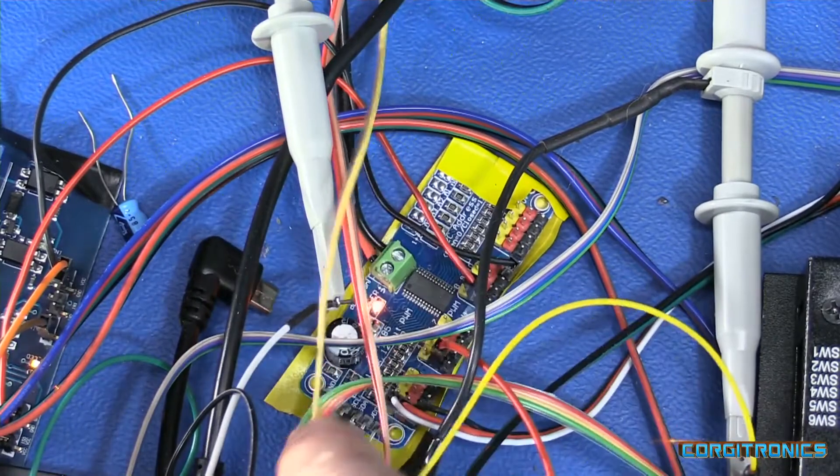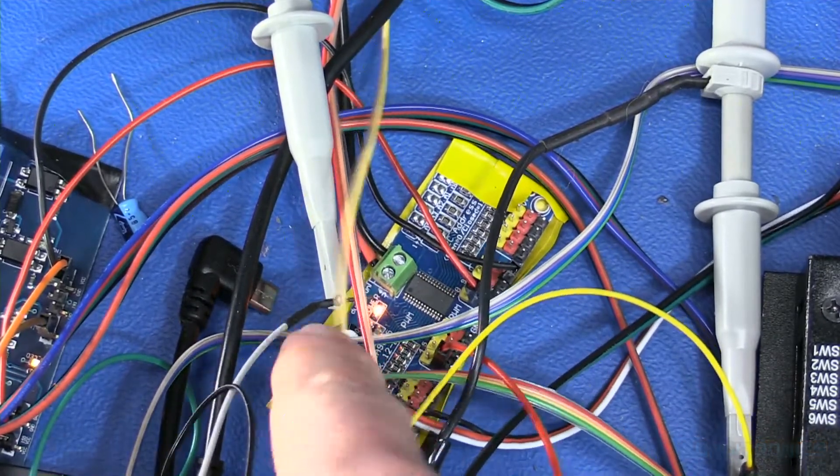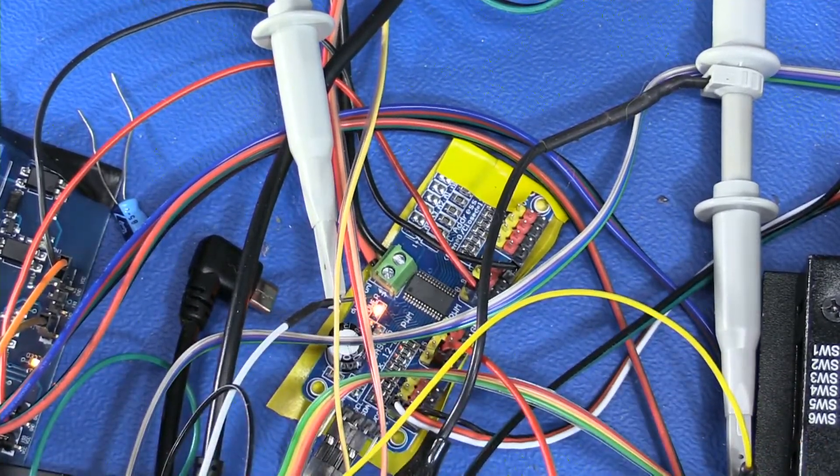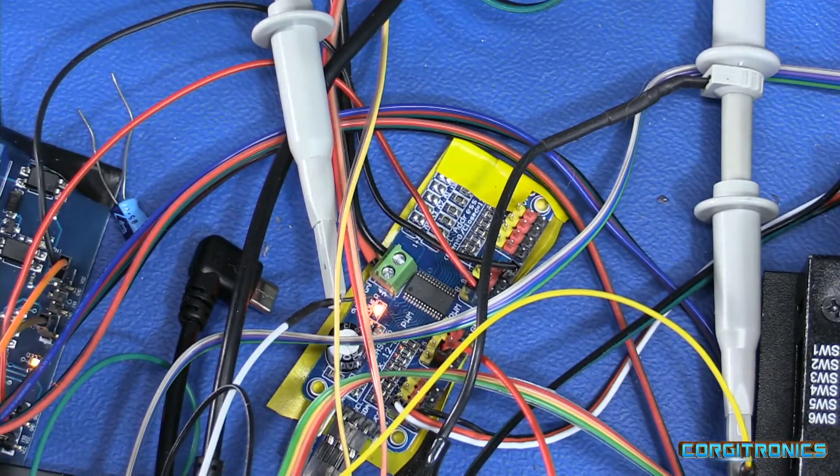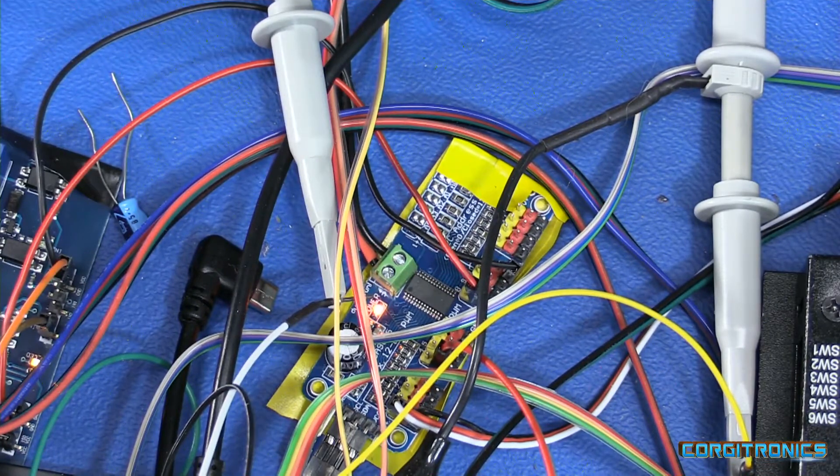That servo is driven by a small board here because the Raspberry Pi is known for not having the most stable PWM outputs.